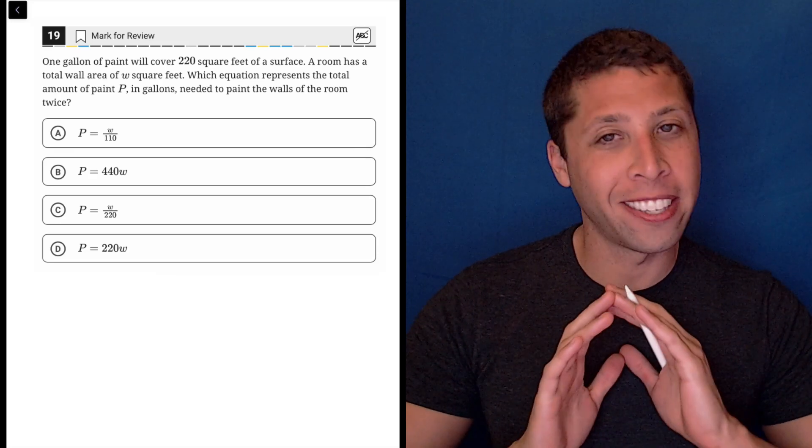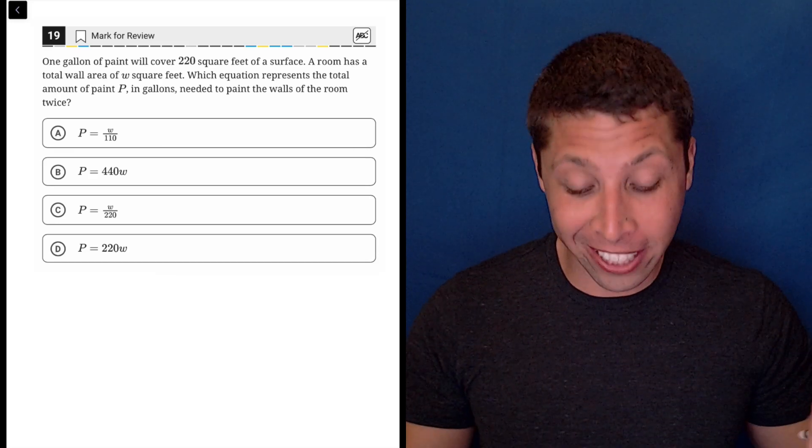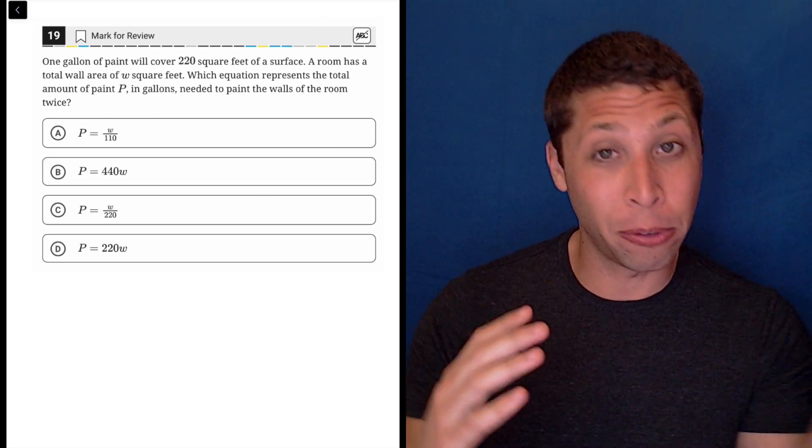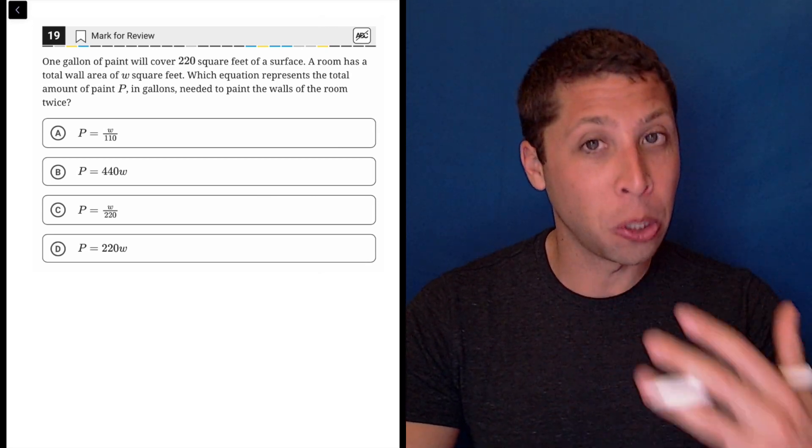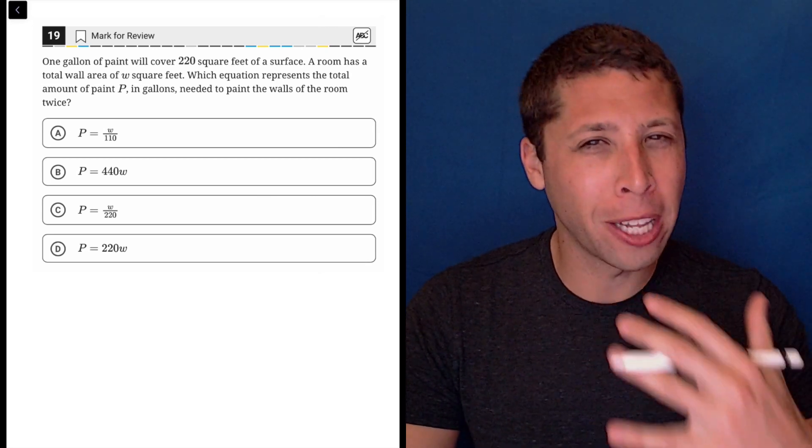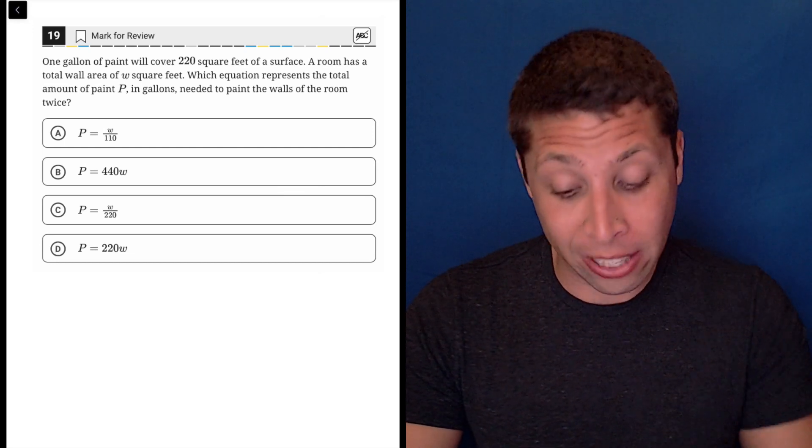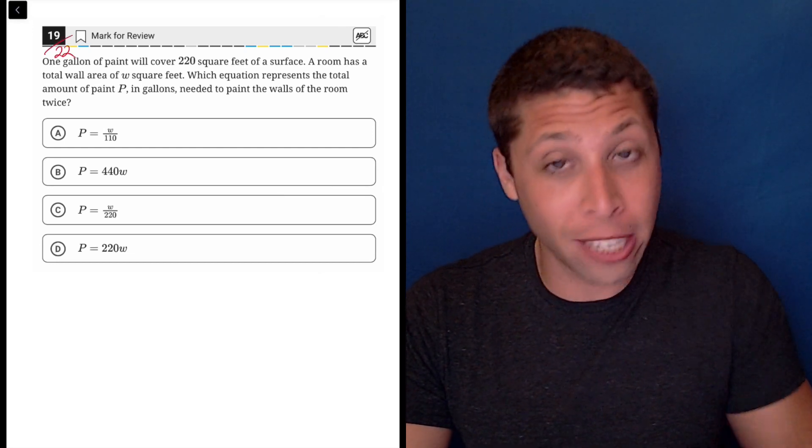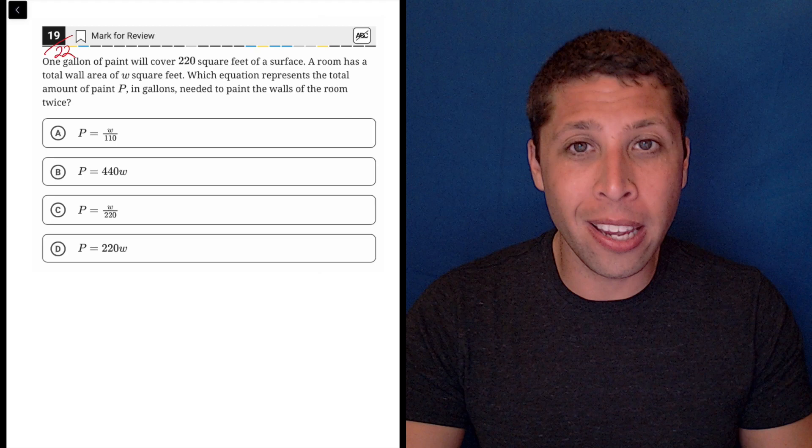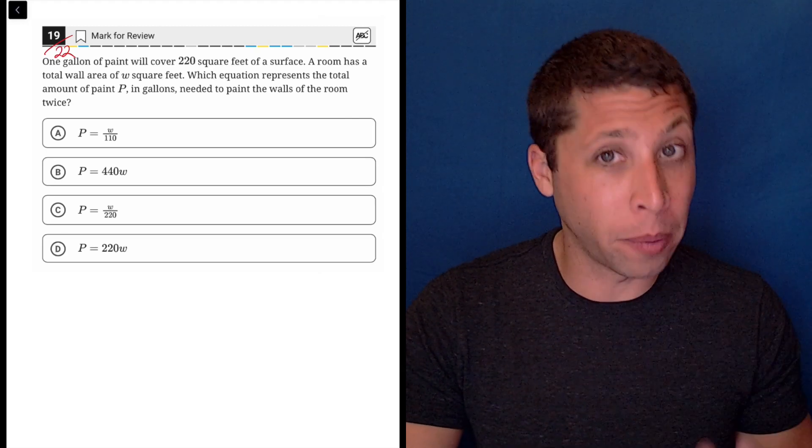Here's a great example of something that the SAT does constantly and you've got to have the same kind of reaction to a question like this. They're giving you a weird situation. They're telling you to come up with an equation for it. It's a hard question, right? We're at 19 out of 22. You should not be trying to come up with this equation just by reading the story.